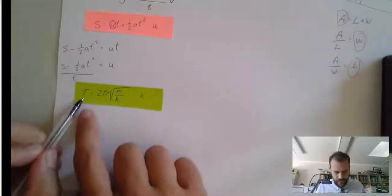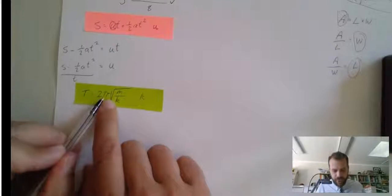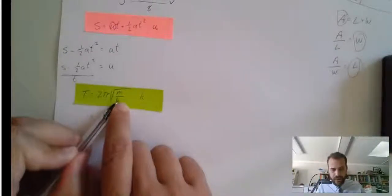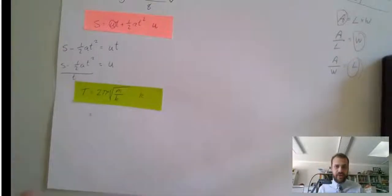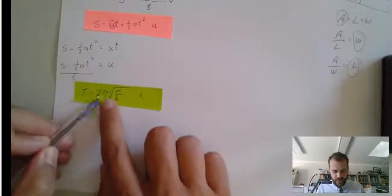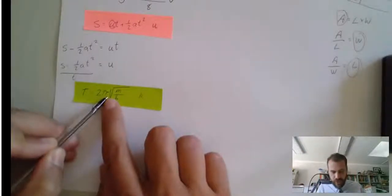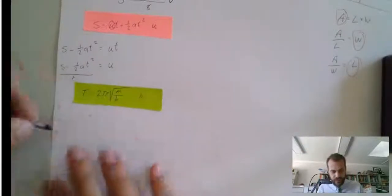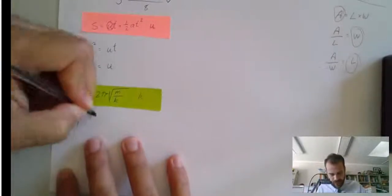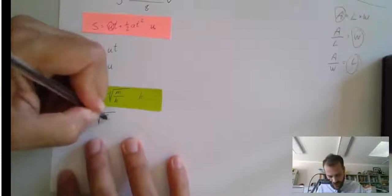First it says t equals 2 pi times square root m over k. That square root's holding us back, so we need to get rid of everything else before we deal with the square root. So, let's get rid of the 2 pi. That's going to be t divided by 2 pi equals square root m divided by k.